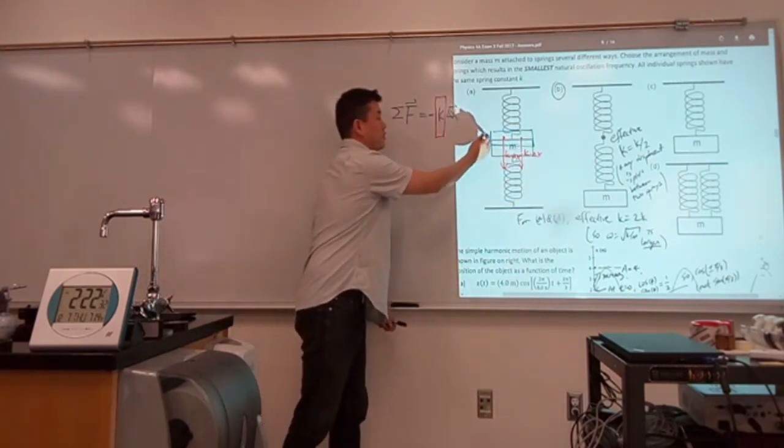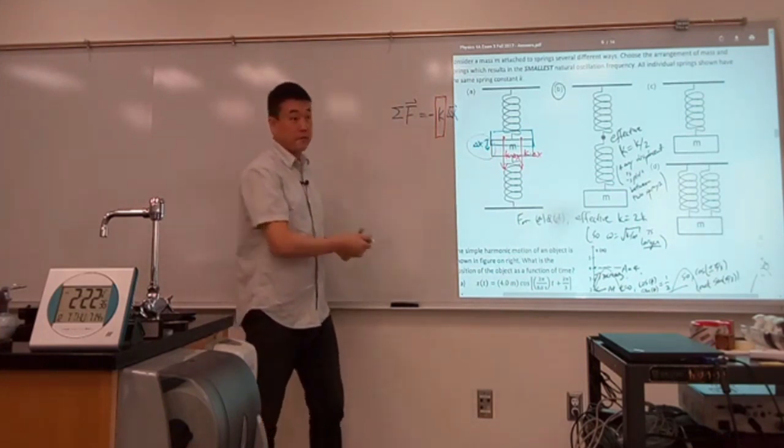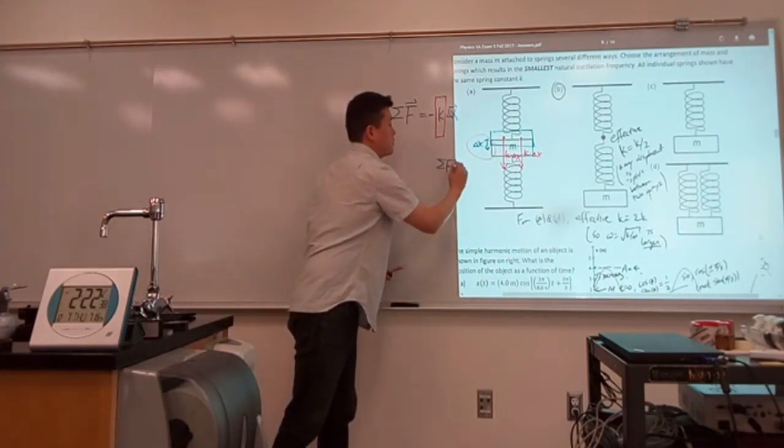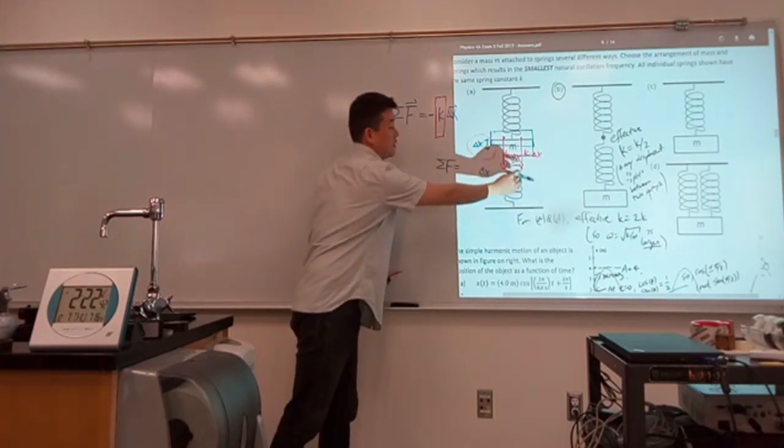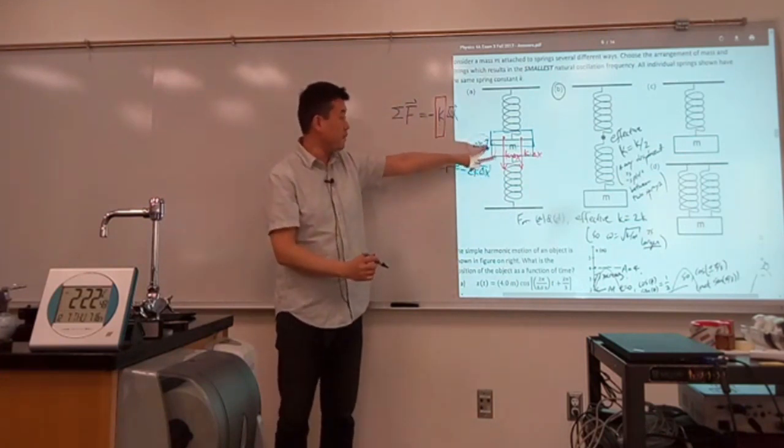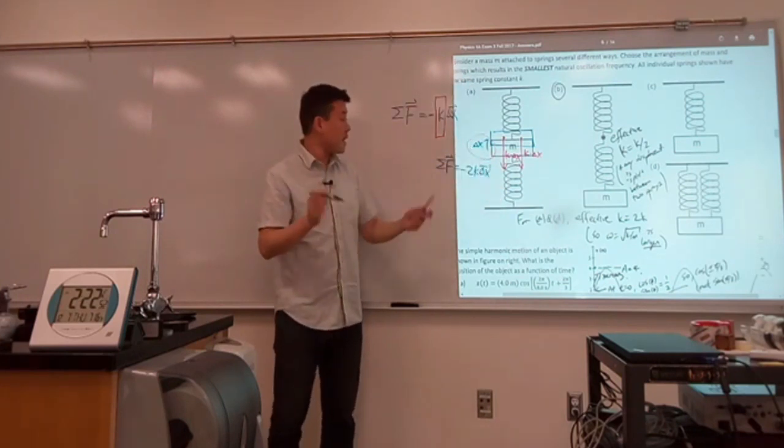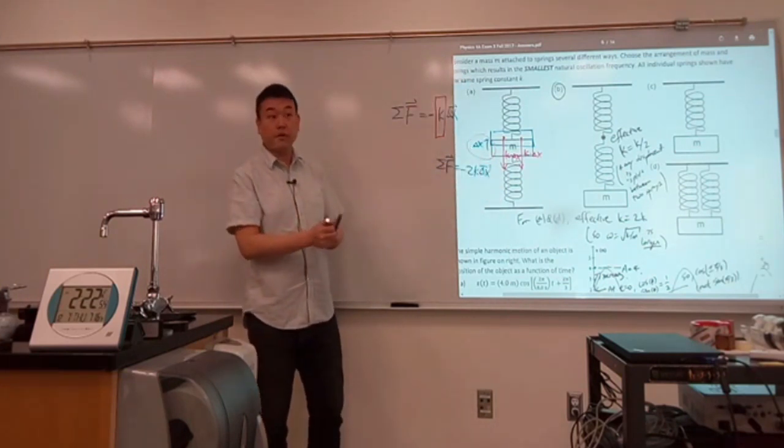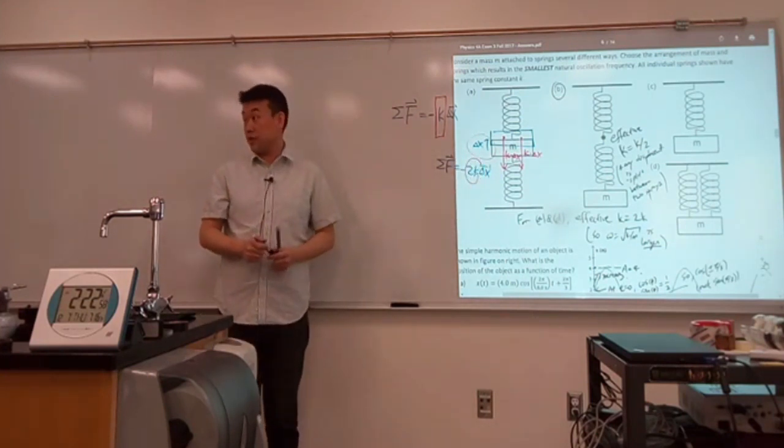So when you introduce this much displacement, what you get for net force is that net force is proportional to delta x, but there's two of these, 2k and the minus sign, since displacement was upward and the forces were downward. So that's how, in the homework problem that you are thinking of, how it was worked out that effective spring constant is 2k.